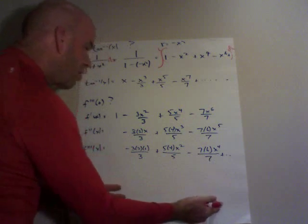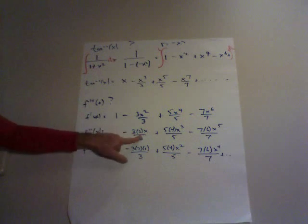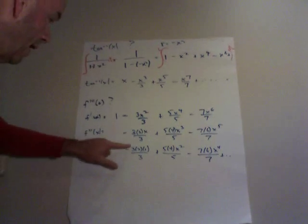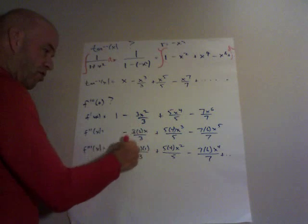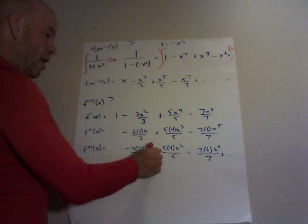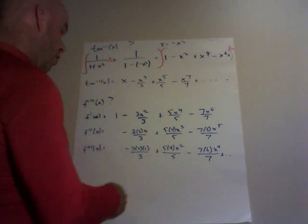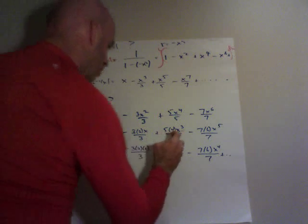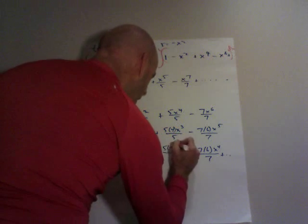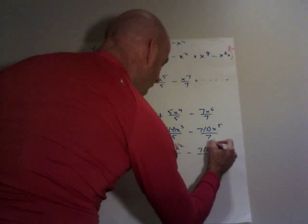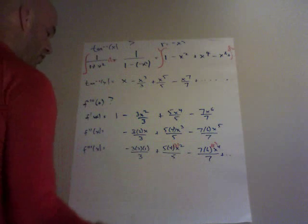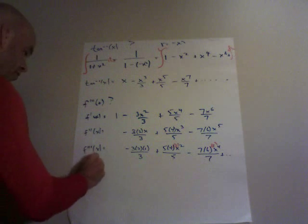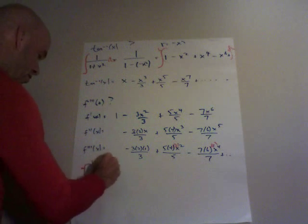Take the third derivative. This term now becomes negative 3 times 2 times 1, and the x term has disappeared, over 3 plus 5 times 4... Oh, I didn't do it. 3. And this would be 5. Negative 7 times 6 times 5 to the x to the fourth. I got ahead of myself.